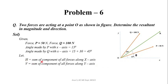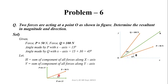Let H equal the sum of components of all forces on the x-axis, and V equal the sum of components of all forces on the y-axis. Force P makes an angle of 15 degrees. The projection of P on the x-axis will be P·cos15, and the projection of P on the y-axis will be P·sin15.